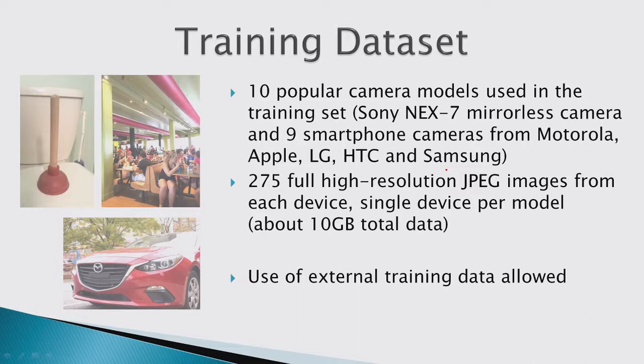Someone asked about the external data. Basically they looked for data online on different social platforms — most images have metadata, so they just read the metadata to identify the camera. For the vast majority of images online, there is no reason for people to change metadata, so if it says iPhone 6, it probably was made with an iPhone 6.